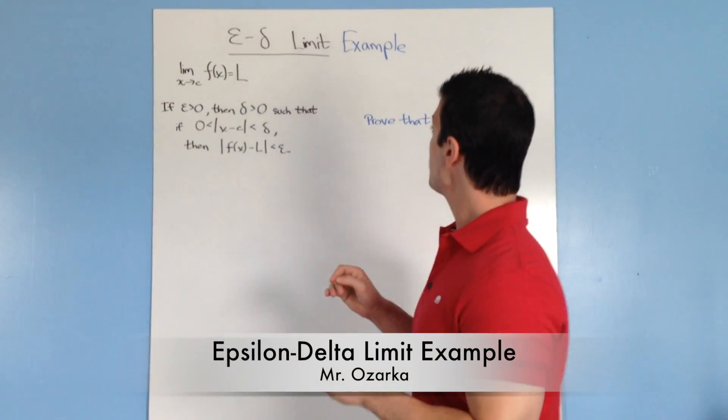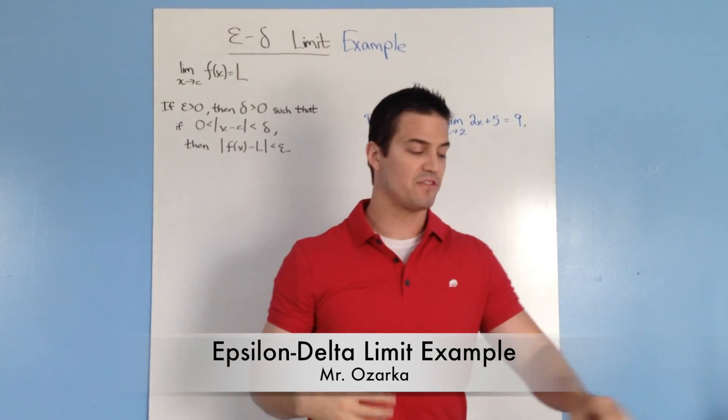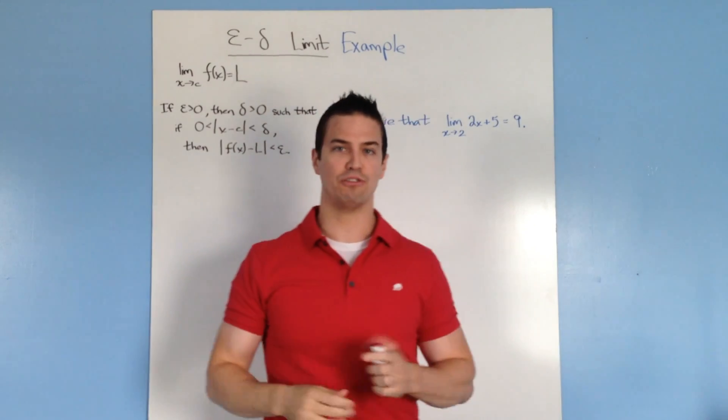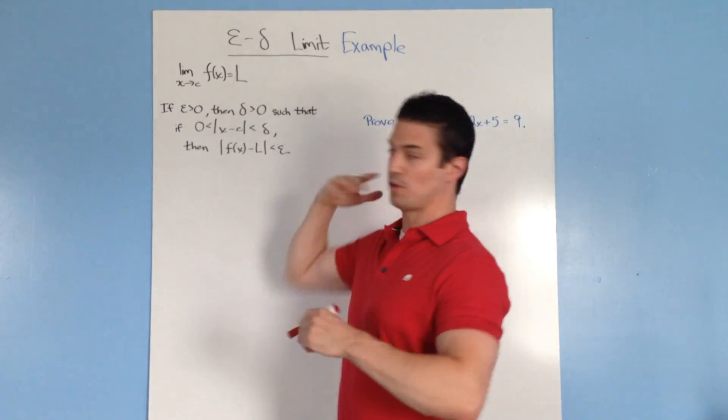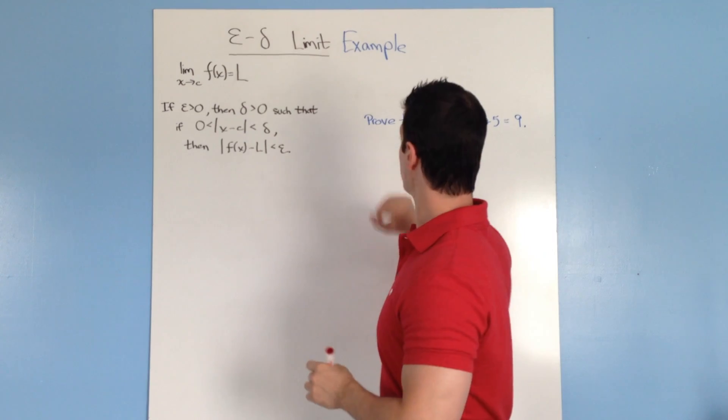Okay, so we're back. This time we're going over an epsilon-delta limit example. Anytime you see these videos, something in blue means I'm doing examples in blue, and I solve the problem in red. The black is usually the general math concepts. That's why you see these different colors here.